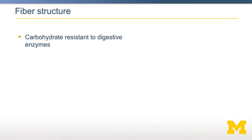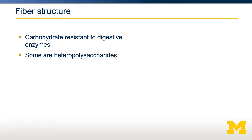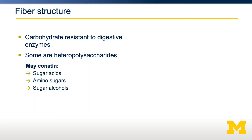The structure of a fiber is a polysaccharide — importantly, one that is resistant to the digestive enzymes in the human body. They might be a homopolysaccharide, for example a long chain of polyfructose, or could be a heteropolysaccharide containing different monomeric subunits. They could contain monosaccharides such as fructose, glucose, or galactose, but also could contain sugar acids, amino sugars, or sugar alcohols.